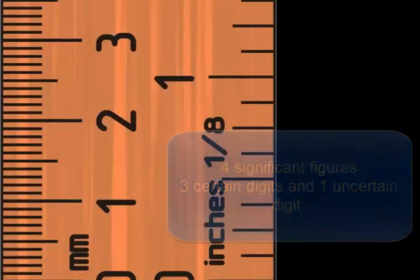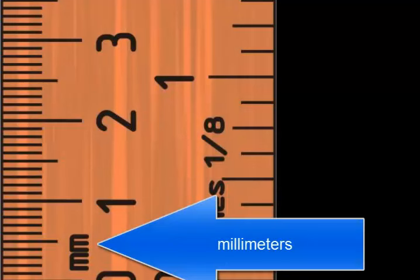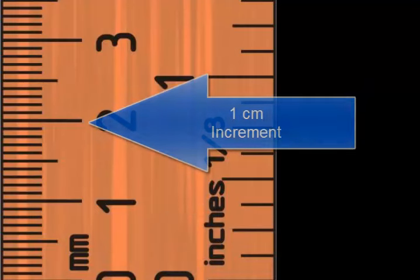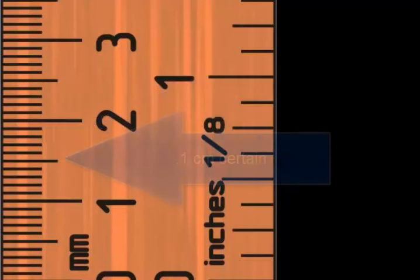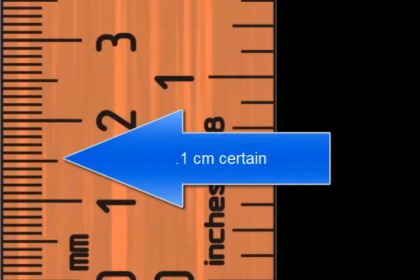When we look at the ruler, the first thing we see is the mm, which means millimeters, but the longer marks are marked off by ones. These larger marks shown are actually centimeters. So this particular ruler is marked every one-tenth of a centimeter.